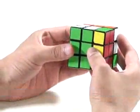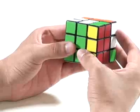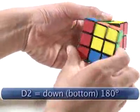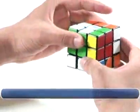If I say down 180 degrees, it means look at the bottom face, turn it 180 degrees, and turn it back to the front face.